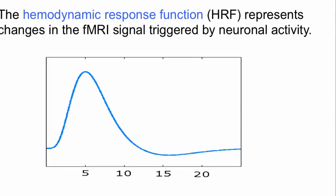Here is an example of the HRF. When I clap my hands, the neurons spike and they need access to oxygen. Heavily oxygenated blood comes to that part of the brain and leads to a rise in signal, and this is what we see happening about five or six seconds after the fact. This goes back to baseline, and after about 20 to 25 seconds, we're back to normal again.